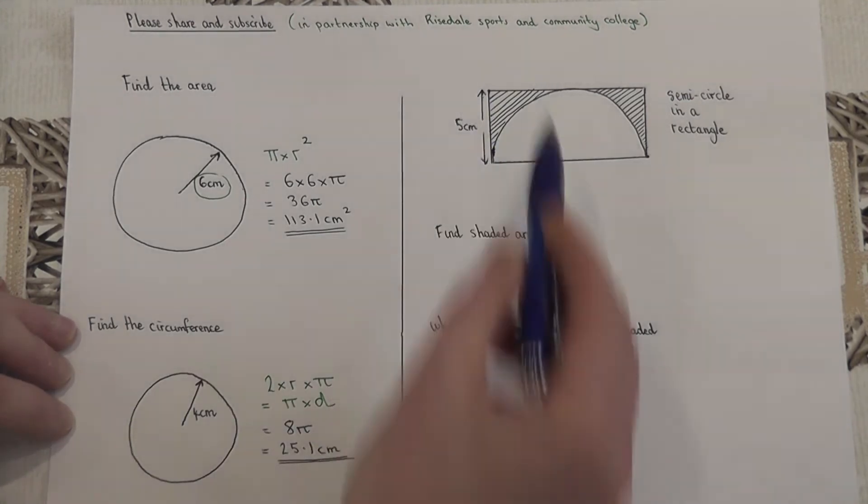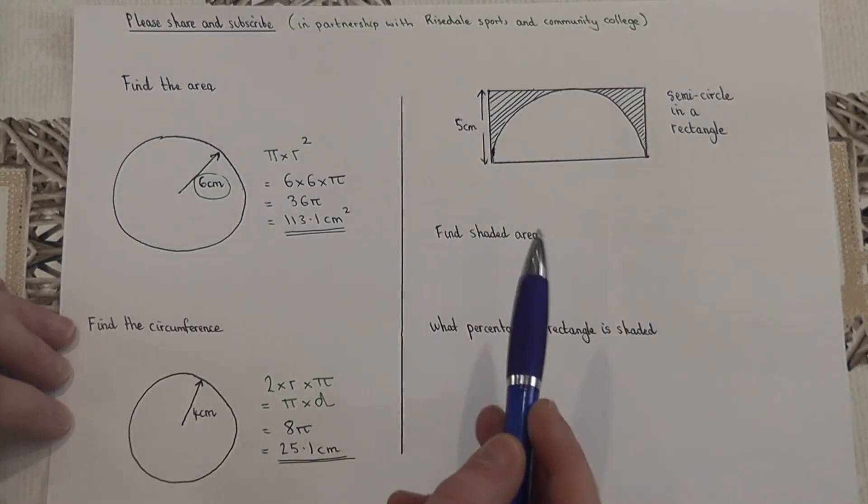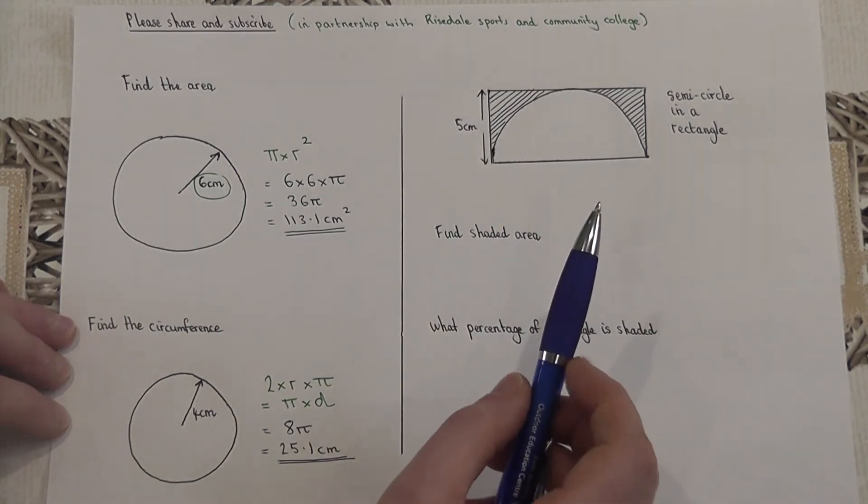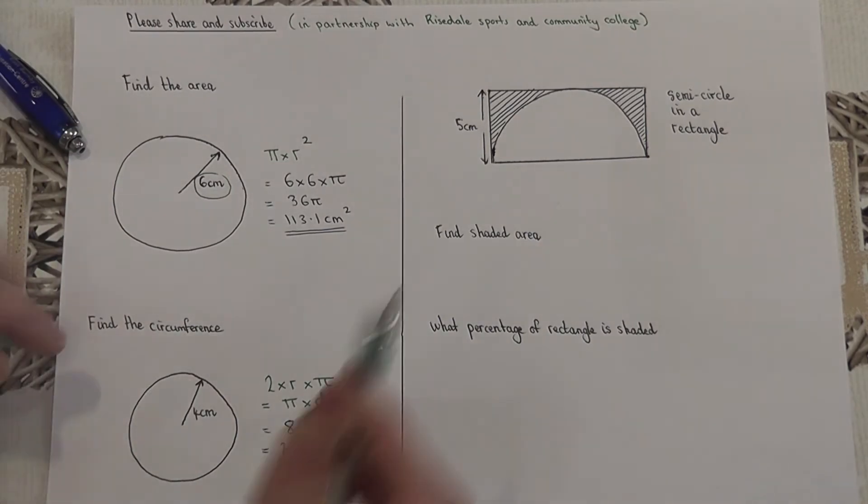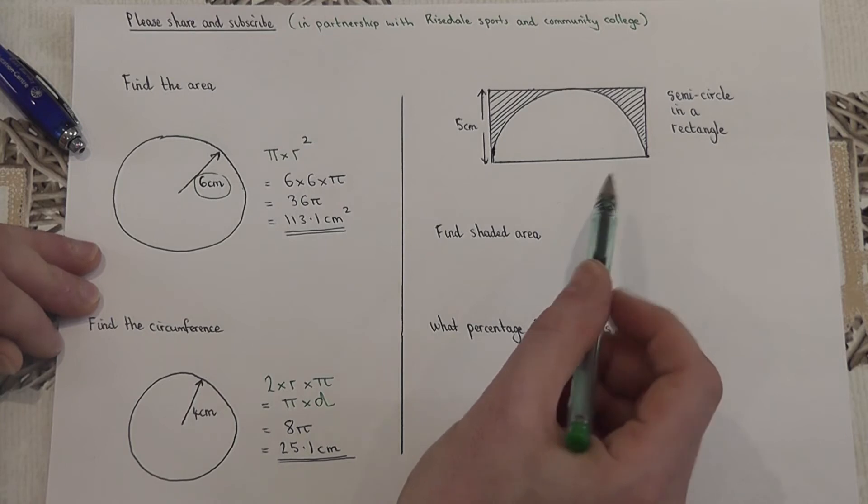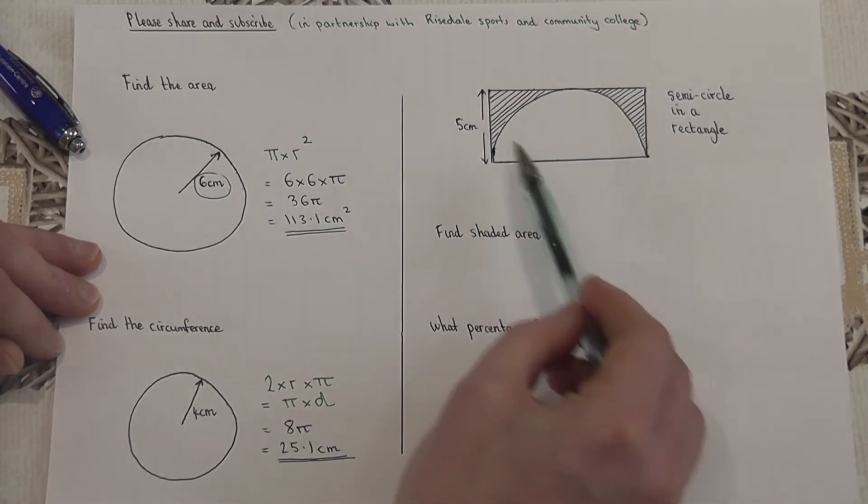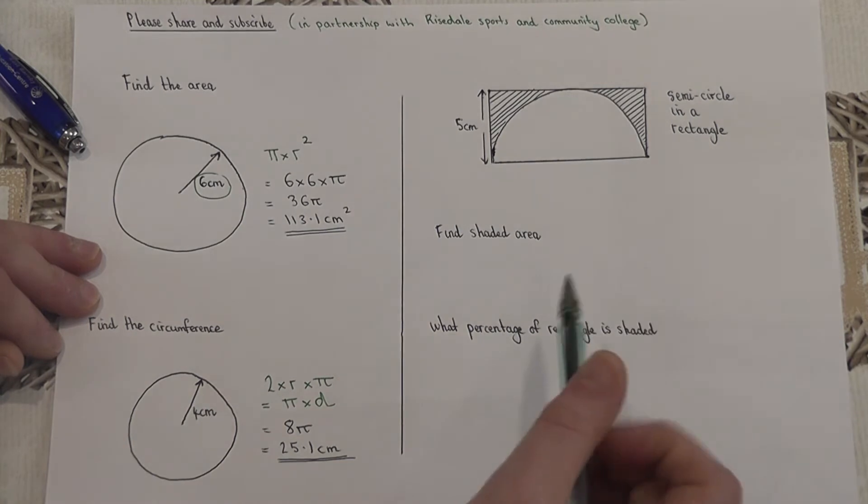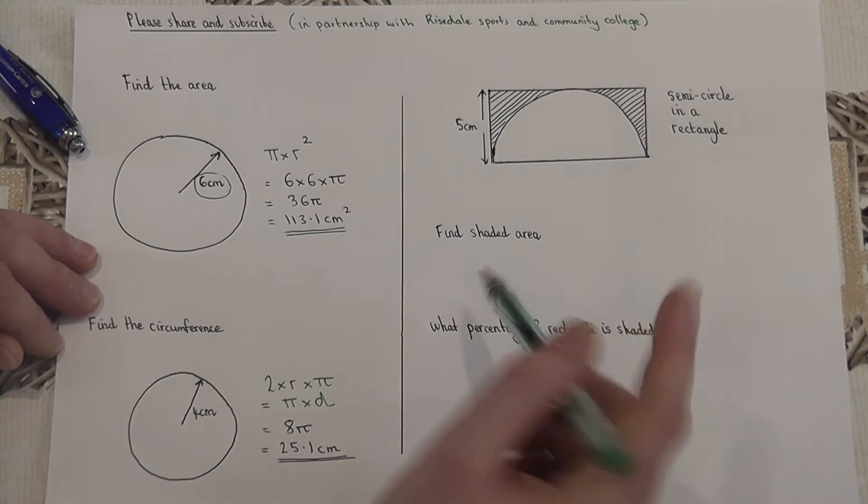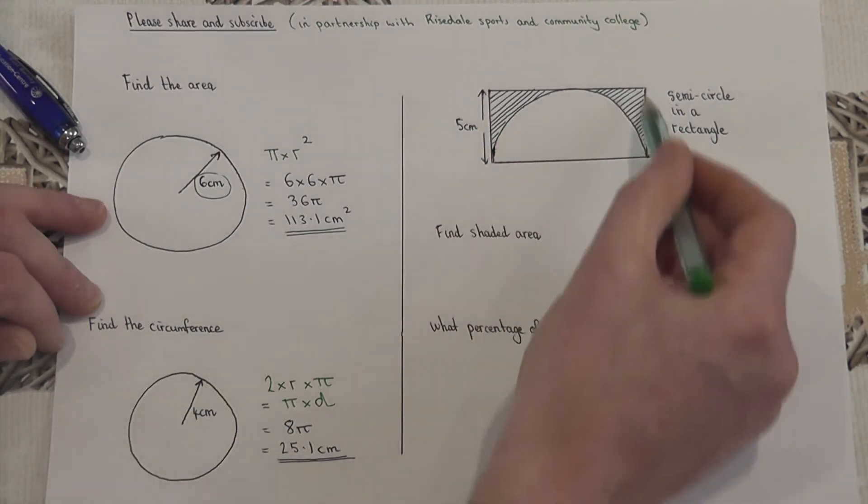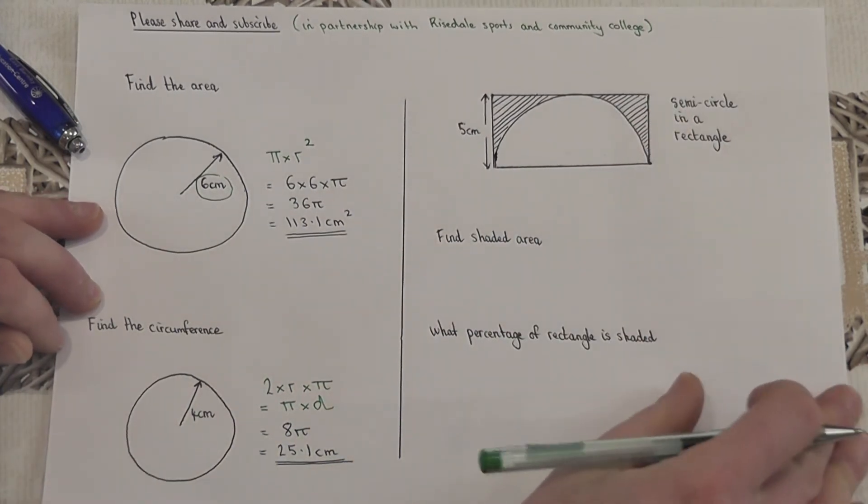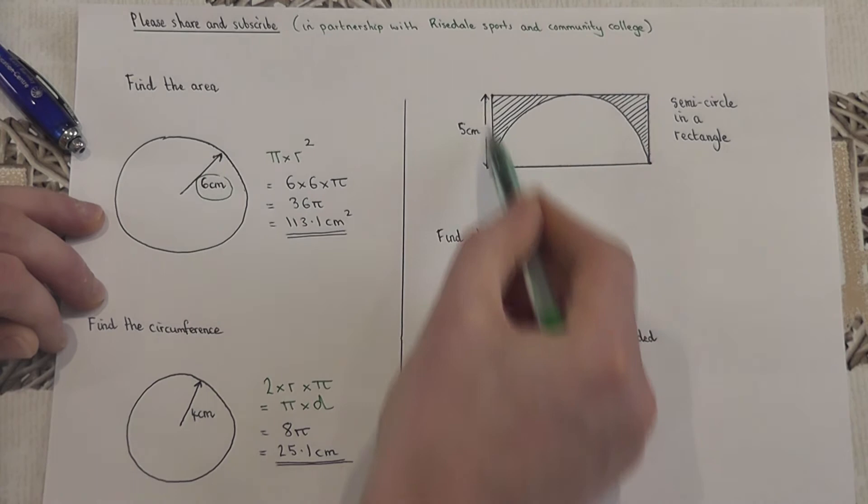But sometimes you're asked for a more complicated example or question involving semicircles, often inside a rectangle. Now then, we're going to find out what this shaded region here is, enclosed by the rectangle and the semicircle. We're only told this measurement here, and step one is to understand that this rectangle, because it encloses a semicircle, has got some quite fixed dimensions. Now this is 5.